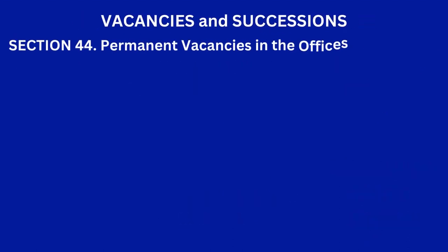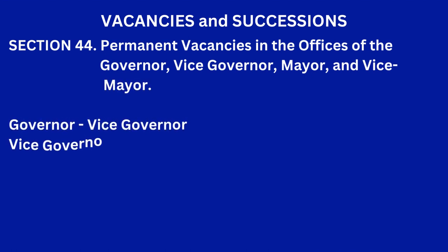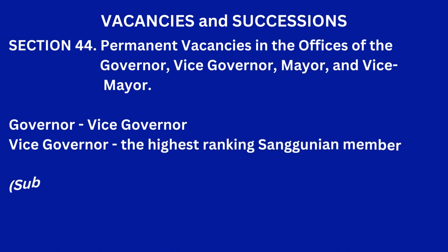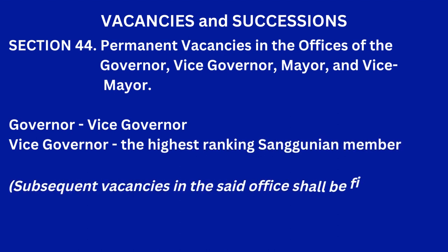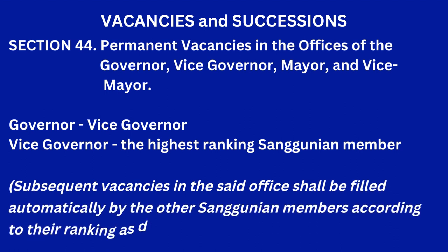On the provisions for cases of vacancies and successions, under Section 4, for permanent vacancies in the offices of the governor, vice governor, mayor, and vice mayor: for governor, the vice governor will automatically replace him. For the vice governor, the next highest ranking Sanggunian member steps up. The same applies to the city mayor or municipal mayor — subsequent vacancies in said offices shall be filled automatically by the other Sanggunian members according to their ranking.